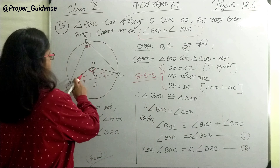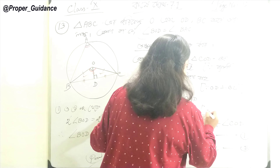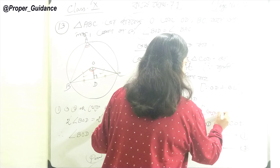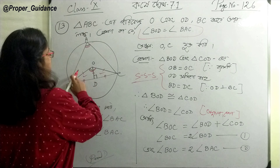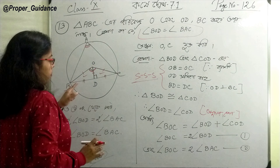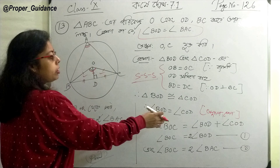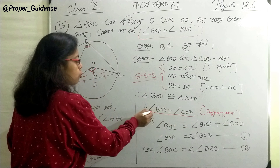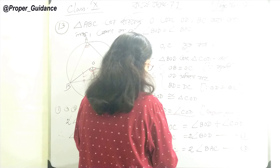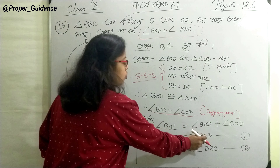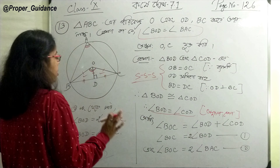Angle BOD is equal to angle COD. So angle BOC — what is BOC? Angle BOD plus angle COD. And since COD is equal, those two together — COD equals BOD, which means BOD equals COD. So angle COD goes to angle BOD.